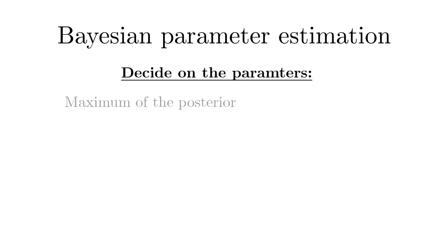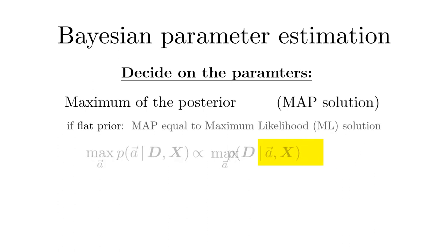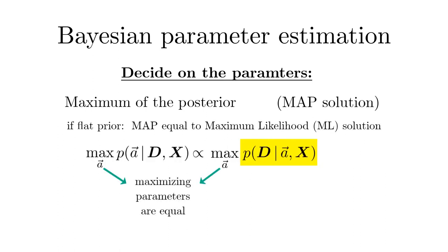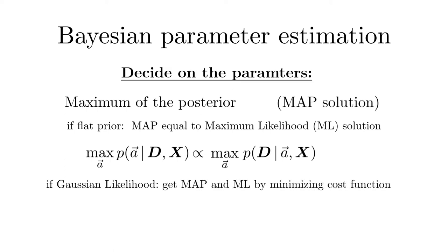An obvious way to decide on the parameters is to take the maximum of the posterior probability density, the so-called MAP solution. In the case of a flat prior, this solution is equal to the maximum likelihood. The maximum likelihood choice of the parameters is the basis of parameter estimation in conventional statistics.